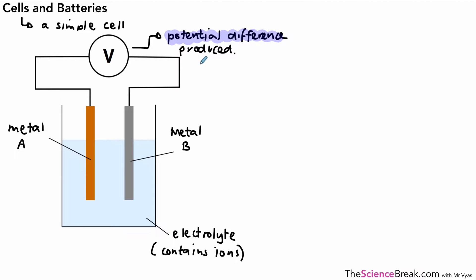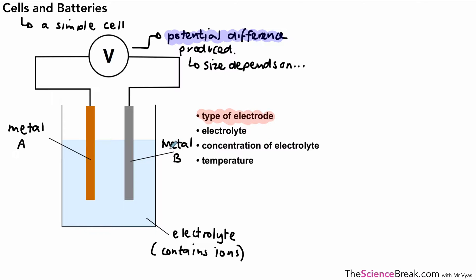Now the size of the potential difference produced can vary, and that depends on four different things that you should know about. So these are listed here. The first one we've got is the type of electrode. And by type of electrode, we're going to look at this in a bit more detail in a minute, but by type of electrode we're talking about the metals that are used there in the diagram.